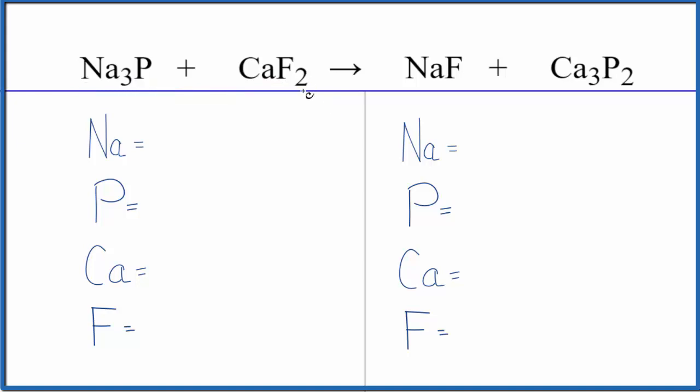So the type of reaction here, if you look at this, the sodium and the calcium, they're changing places. We have sodium phosphide, but now we have sodium fluoride. We had calcium fluoride, now we have calcium phosphide, so double displacement reaction.